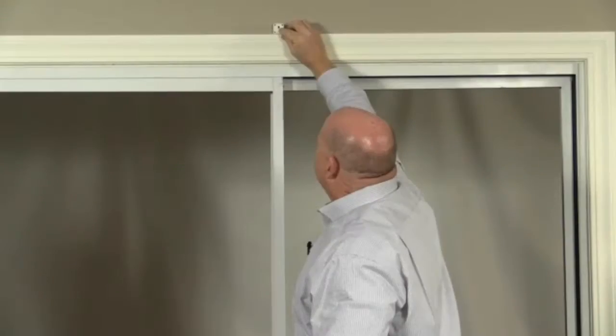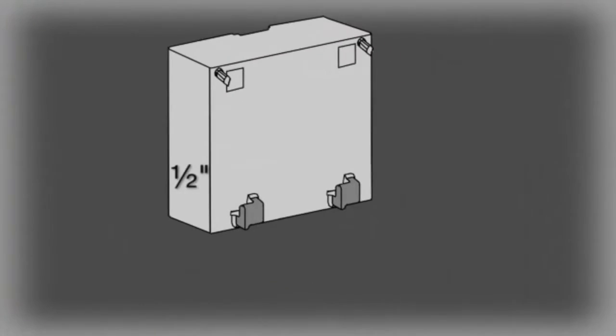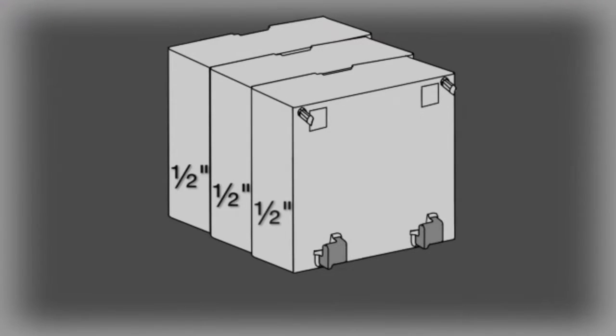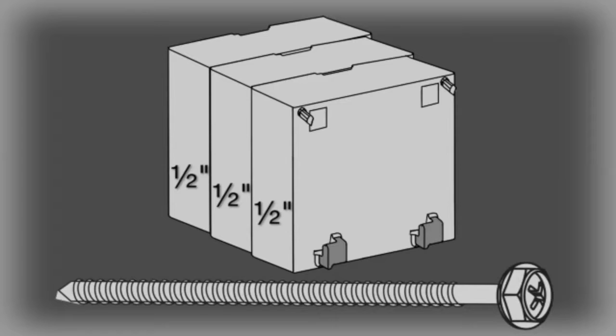If mounting to a wall above an architrave, order spacer blocks to pack out the brackets. Up to three 12mm spacer blocks may be used.